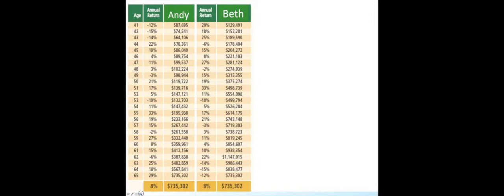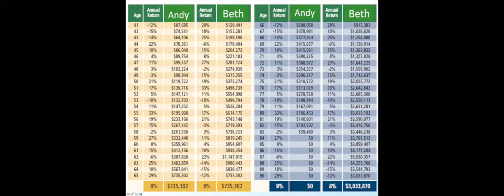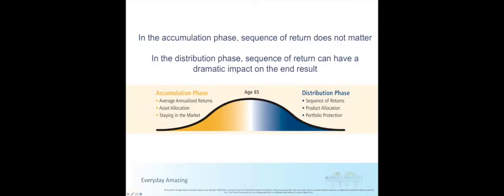However, during the distribution phase, if they both leave their investments in the stock market and start withdrawing 8% each year, and the markets behave the same way they did for each of them during the accumulation phase, over the next 25 years, Andy ends up broke when he's 83, while Beth is still going strong when she's 90. The moral of this story is: in the accumulation phase, sequence of returns does not matter, while in the distribution phase, sequence of returns can have a dramatic impact on the end result.